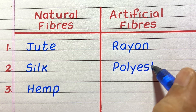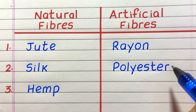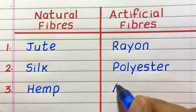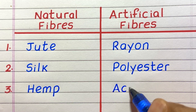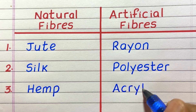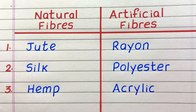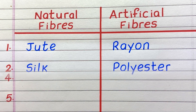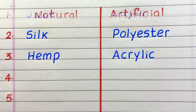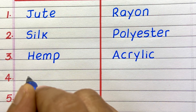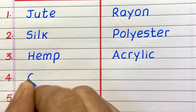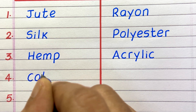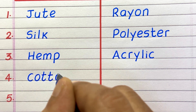Second artificial fiber is polyester, third is acrylic. Fourth example of a natural fiber is cotton.